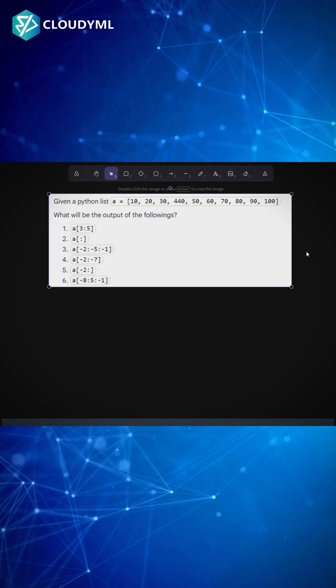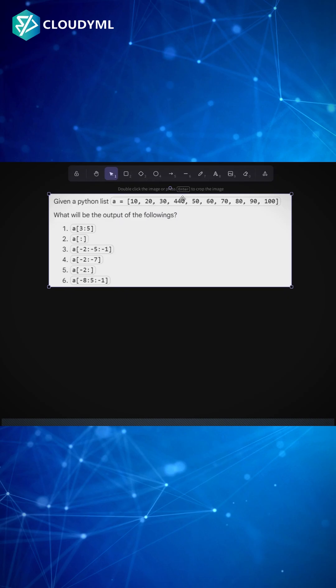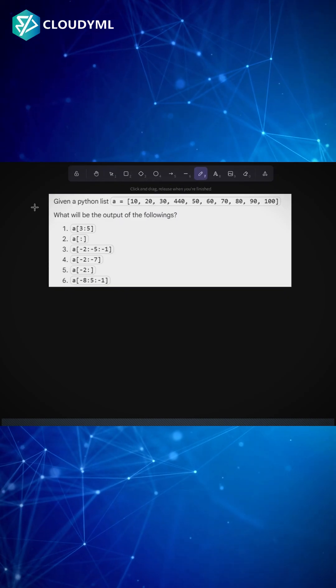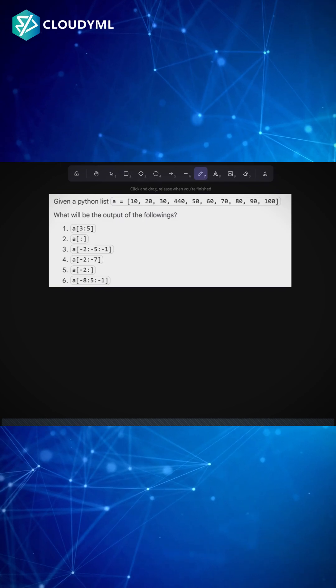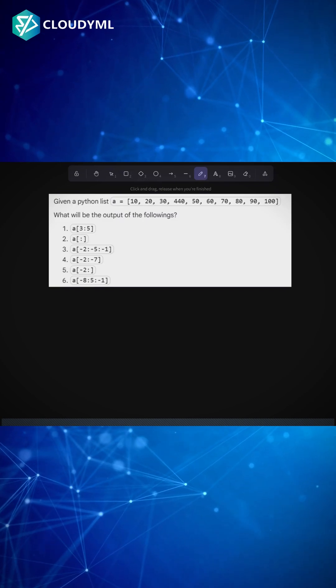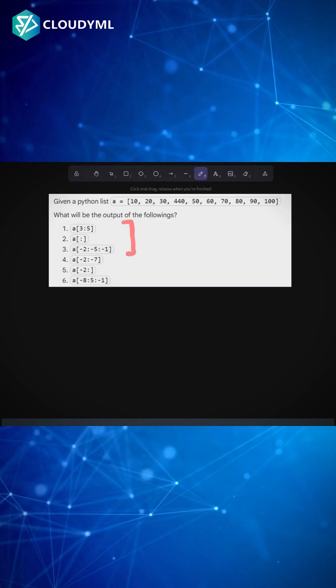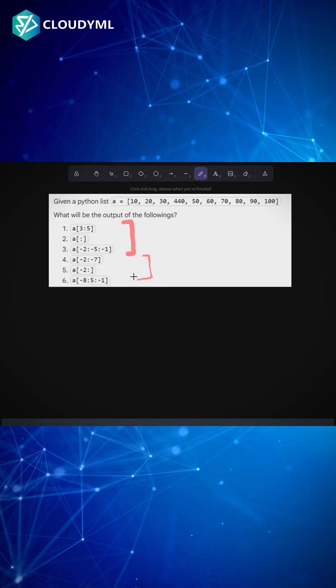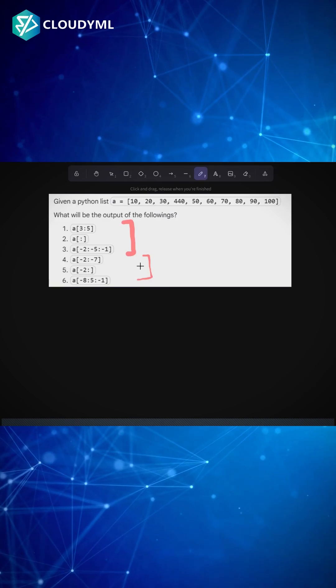We have a list in Python: a = [10, 20, 30, 440, 50, 60, 70, 80, 90, 100]. We will divide this into two parts. The first part would cover the first, second, and third question, while the second part would cover the fourth, fifth, and sixth question. List slicing is one of the most important topics in interviews.